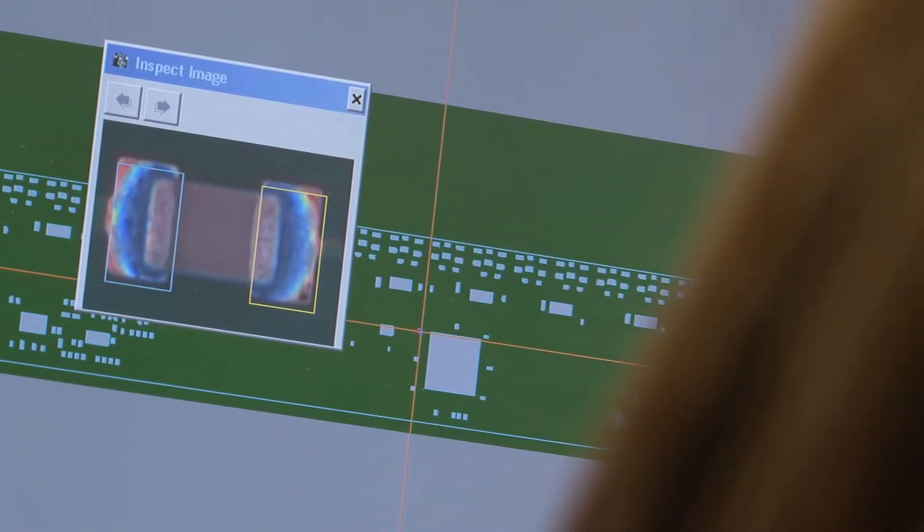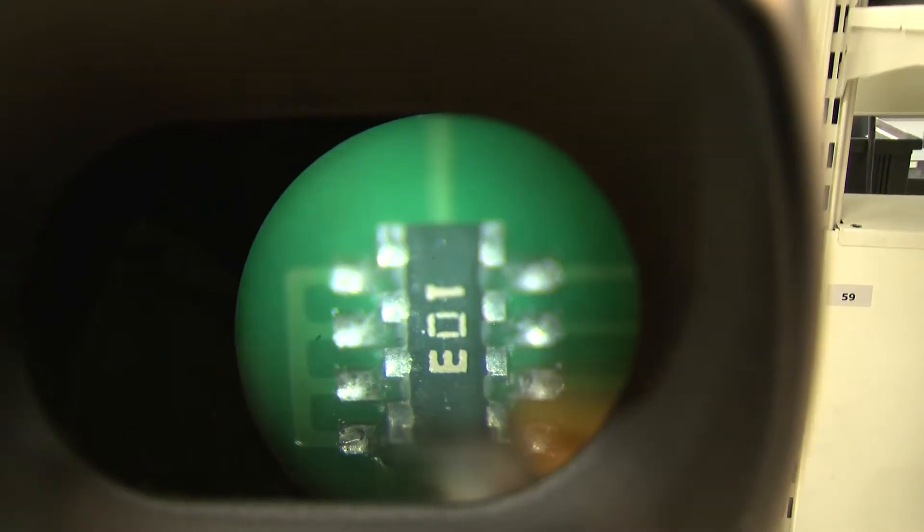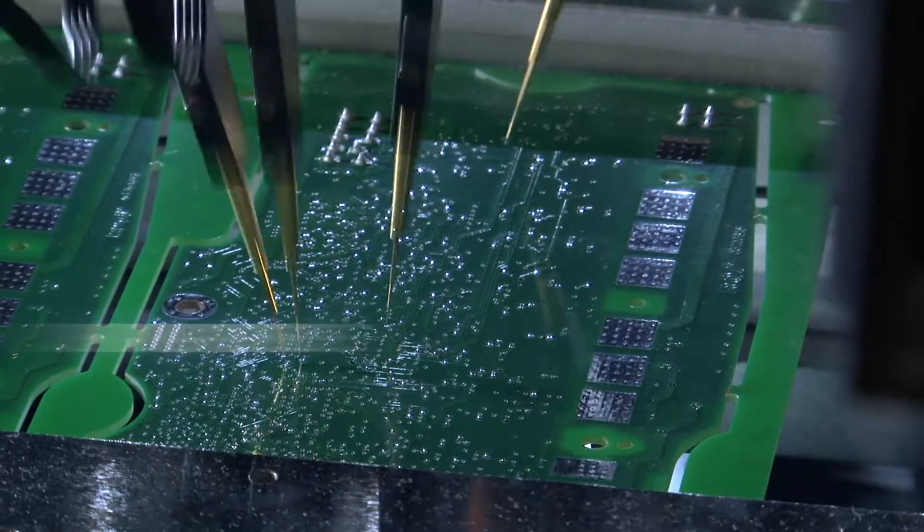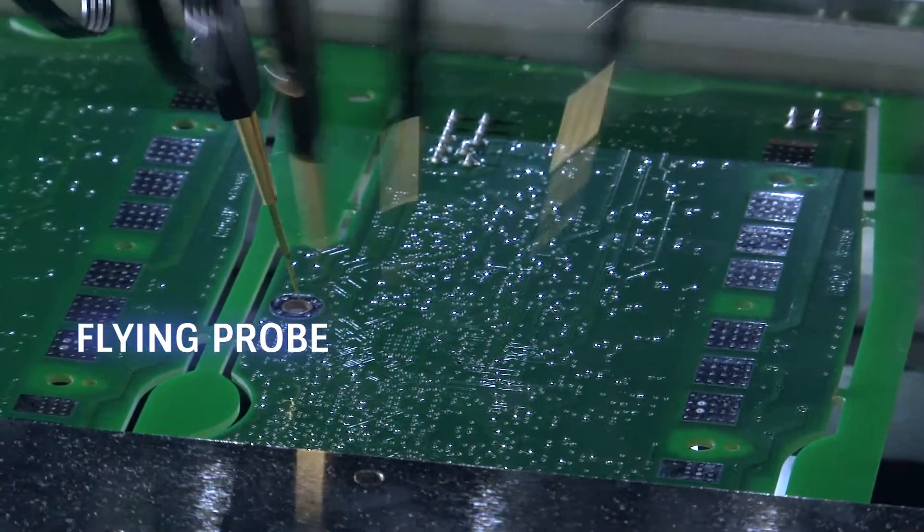Quality should be built into the design of the product, built into the process and not only verified at the end of the production flow. This is key to our production philosophy.